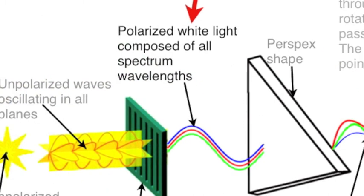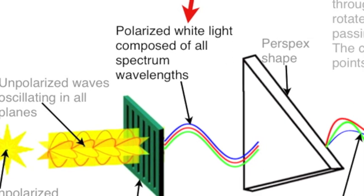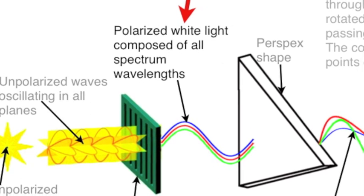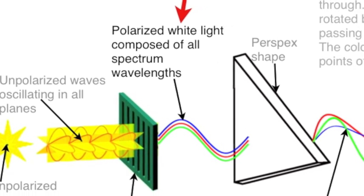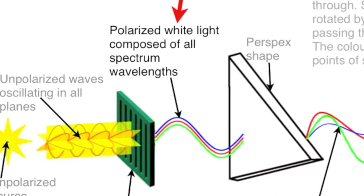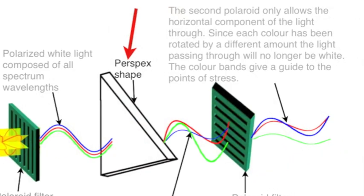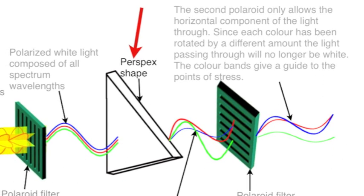That polarized light is white light composed of all spectrum wavelengths, the blue through to red. This white light passes through the perspex shape.